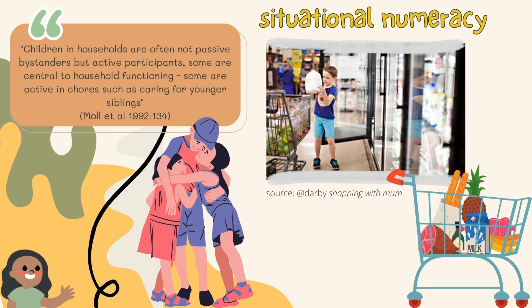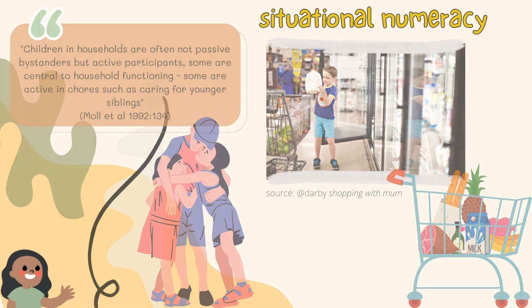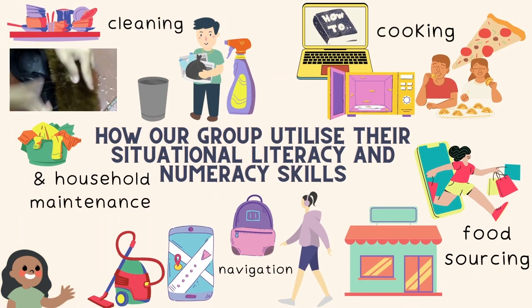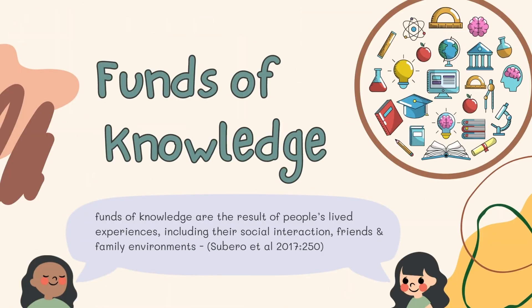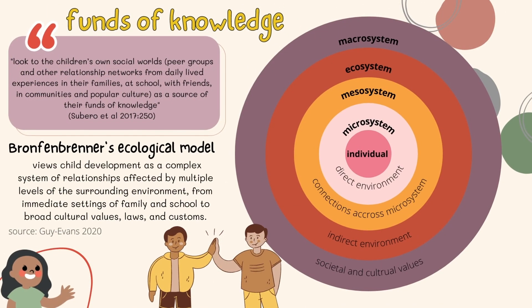Through the impact of neglect, our children have developed the ability to provide basic care for their siblings and themselves — for instance, understanding money values to source food and the digital proficiency for finding instructional videos or information. These lived experiences are what Moll considers to be funds of knowledge, examined through Bronfenbrenner's model of ecological systems, focusing particularly on their micro systems.